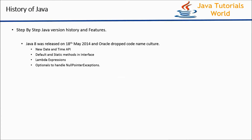The next release of Java is Java 8.0, released on 18th May 2014. This is the latest release as of now. From this release onwards, Oracle dropped the codename culture, so this release doesn't have any codename. In this release, the API for date and time was improved. This release includes default and static methods in interfaces. Lambda expressions were introduced, and null pointer exceptions are handled more effectively with the help of Optionals.